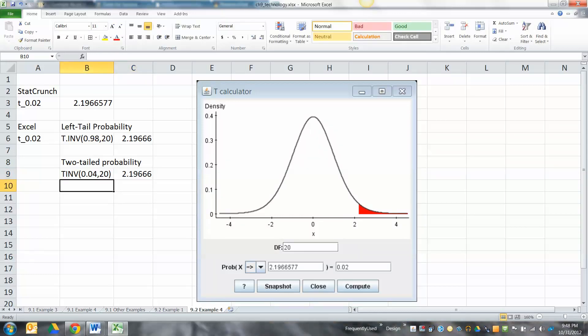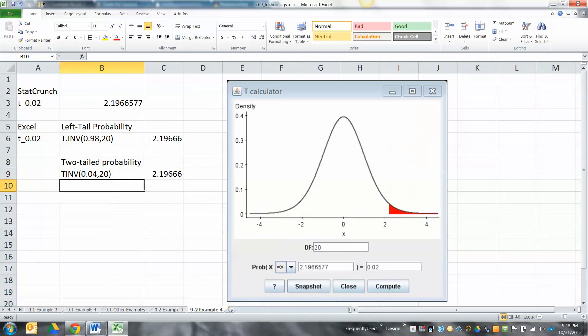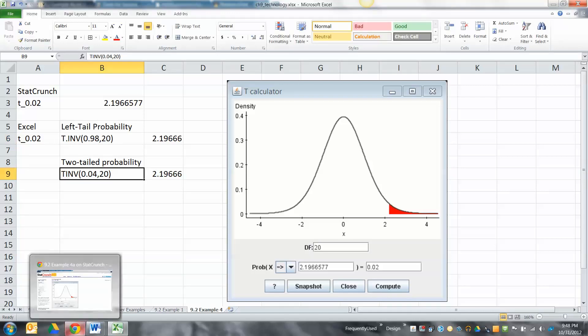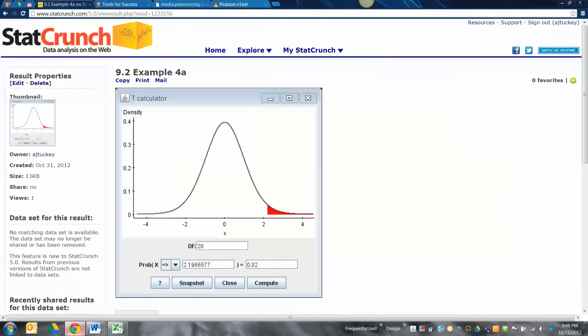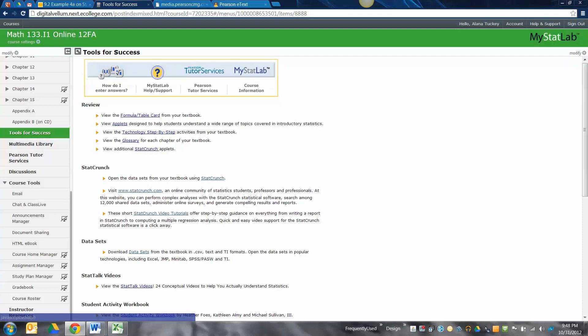Whereas the newest version, T.INV, just says take the left tail probability, like NORMINV does. So left tail's 0.98, comma 20. That's how to do it in Excel, but there's also a table. I just wanted to show it to you because I give you that table on your exams, so you might as well know how to use it.